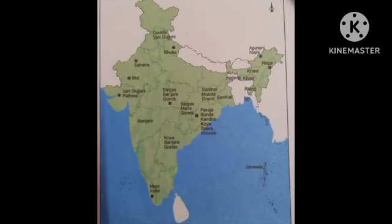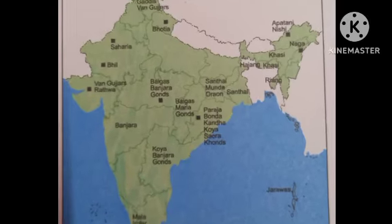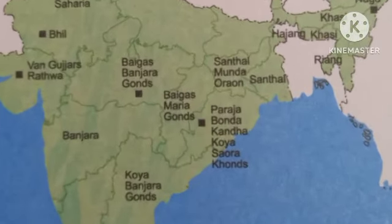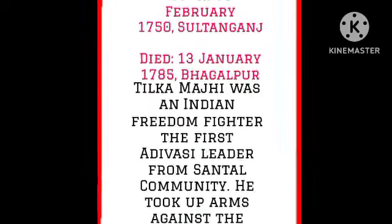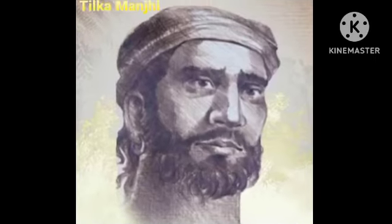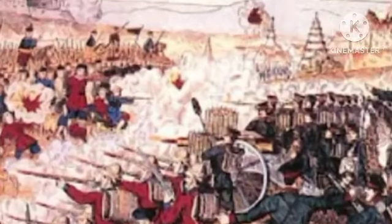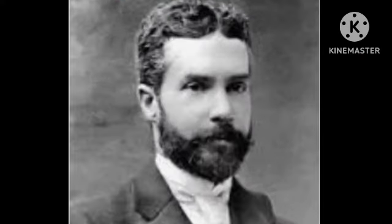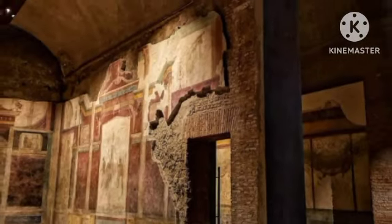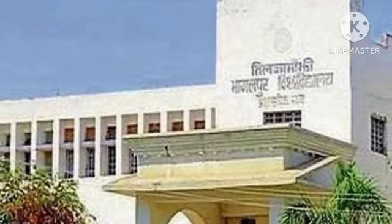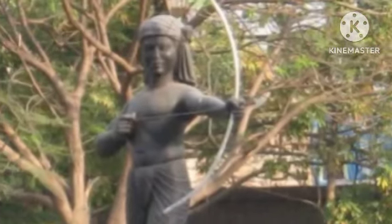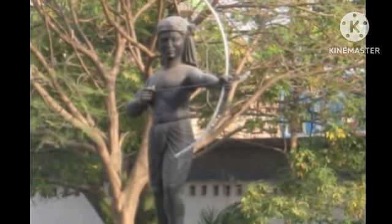Bihar and Jharkhand states, along with other provinces, have been the main focal point of the tribal rebellion. In 1780, Tilka Manji first led the Santhal community in an armed rebellion against the British for independence, which started from Bihar. Manji injured the British commissioner Augustus Clevland by attacking with an arrow. That British commissioner died. After this, the British surrounded Manji in the forest and hanged him from a banyan tree. Even today, Tilka Manji University and a life-size statue at Tilka Manji Chowk exists in his memory in Bhagalpur, Bihar.